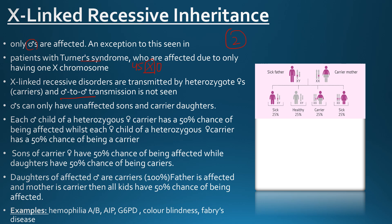As seen here, the father is sick because he has only one X chromosome and that chromosome is unfortunately mutated. The mother is a carrier because she has one mutated X chromosome but the other X chromosome is normal. This results in 25% of her daughters being carriers, 25% being sick, and the sons being either sick or healthy. There is no carrier state in the sons.